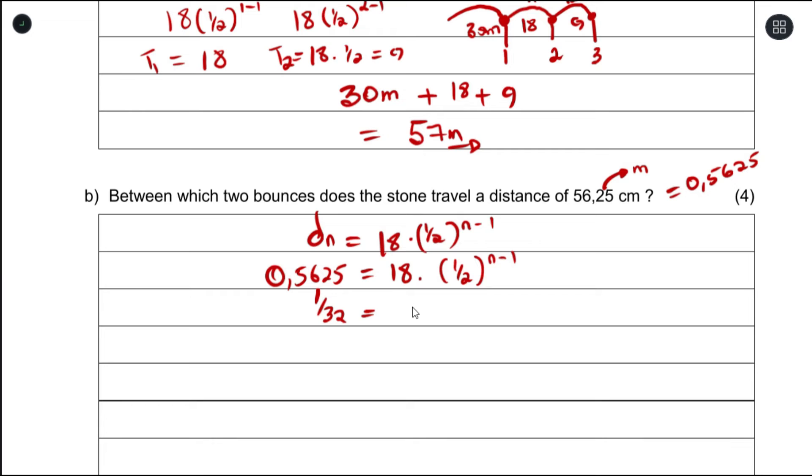So 1 over 32 equals one-half to the power of n minus 1. I can rewrite 1 over 32 in terms of exponents: 1 over 2 to the power of 5 is the same as 1 over 32, which is one-half to the power of n minus 1. Since the bases are the same, we can equate the powers, so n minus 1 equals 5, therefore n equals 6.